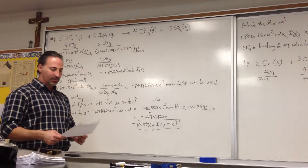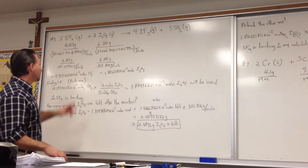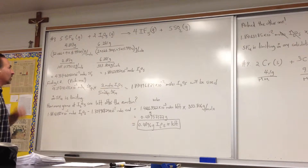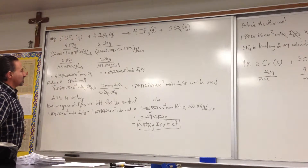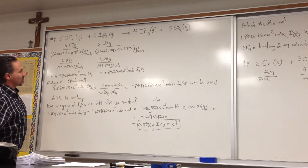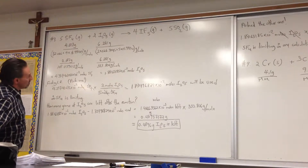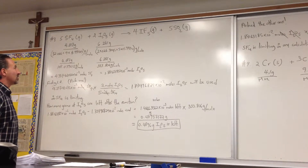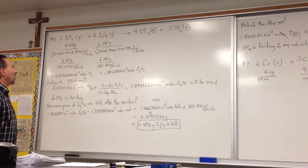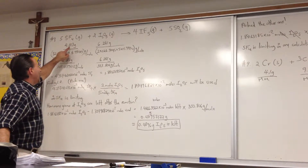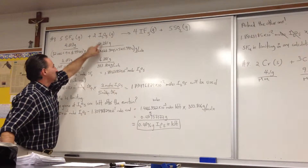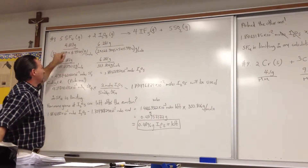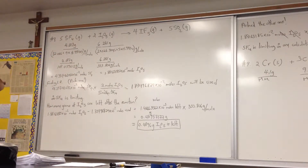I've written all the chemicals involved. I'm assuming all of them are in the gaseous state, although some of them are probably solids at room temperature. We'll assume the reaction is being done at a higher temperature. I've written down the grams of each substance under the substance — here's the grams of I2O5 and here's the grams of sulfur tetrafluoride.